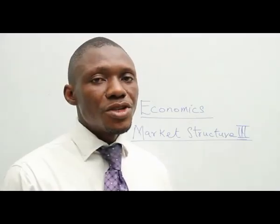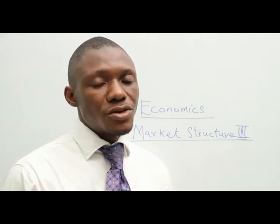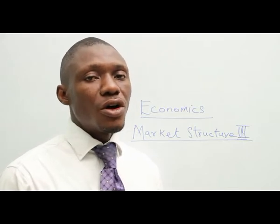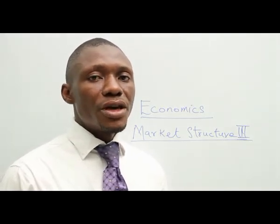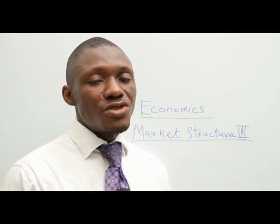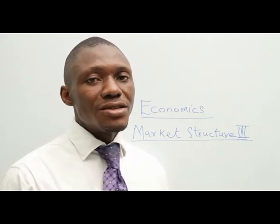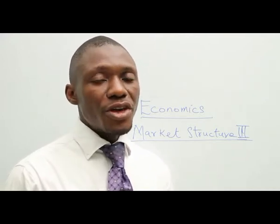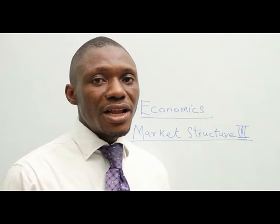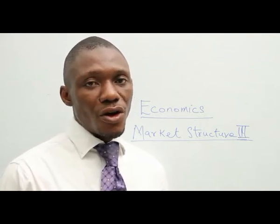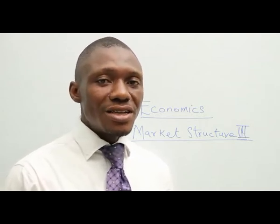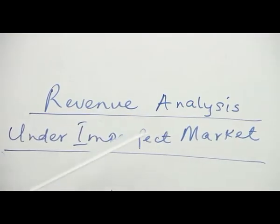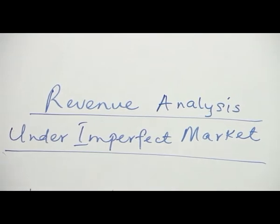In economics class today we shall be looking at market structure three. We would like to treat price and output determination under monopoly. But before we go into this, we would like to have knowledge with respect to revenue analysis under monopolistic market — that is, under monopoly. We'll look at that before we look into the graphical aspect of price and output determination under monopoly.